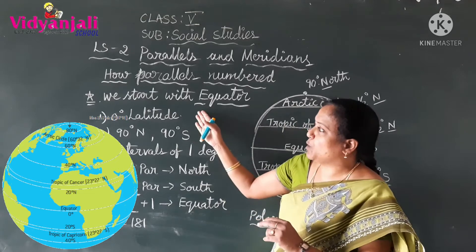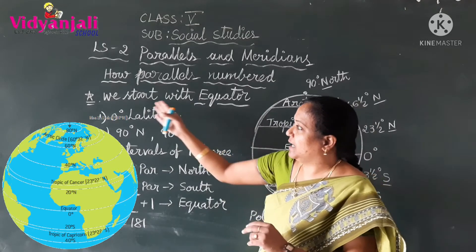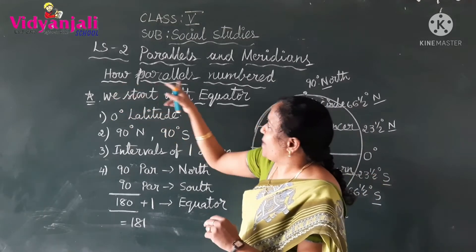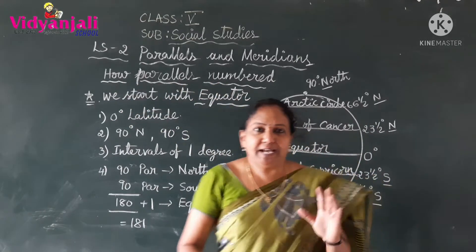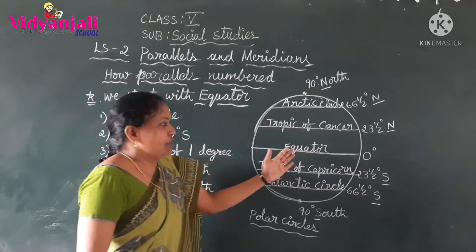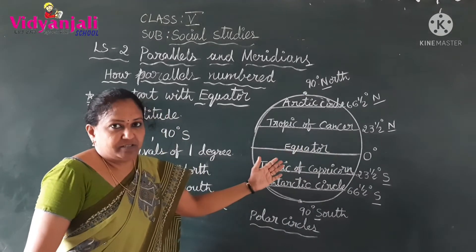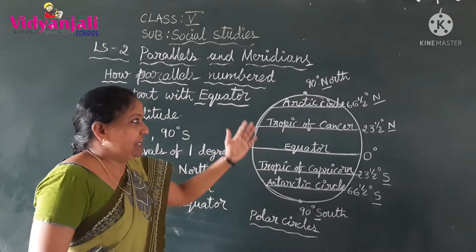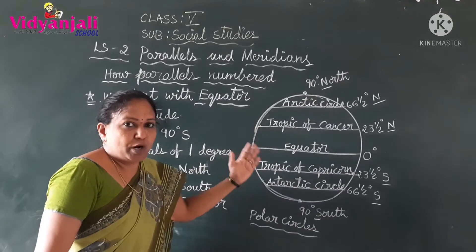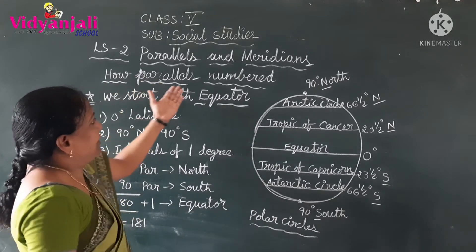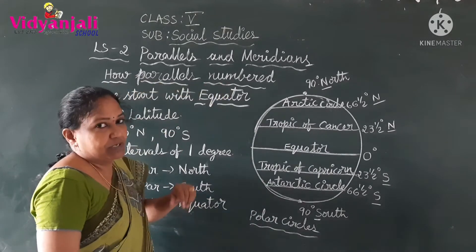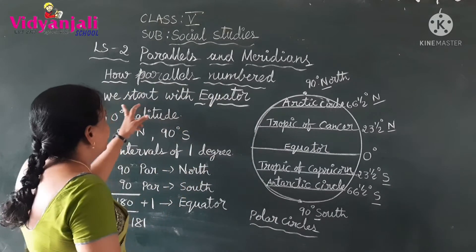Now, how are parallels numbered on the globe? How can we measure them? How many important parallels are there, and how can we measure the numbers?